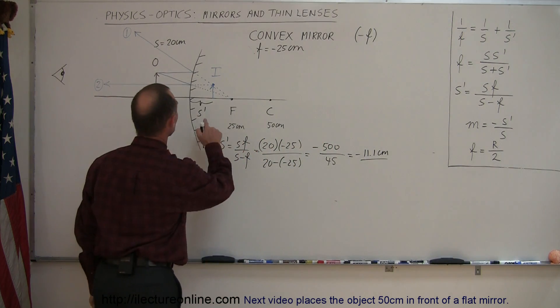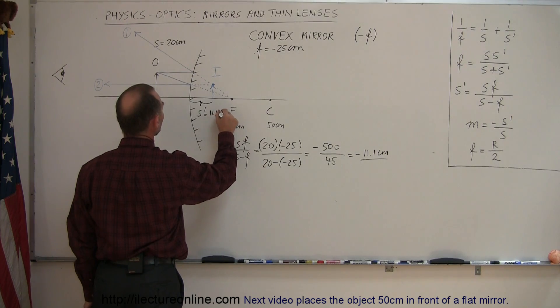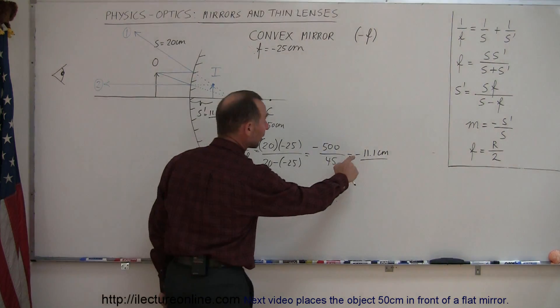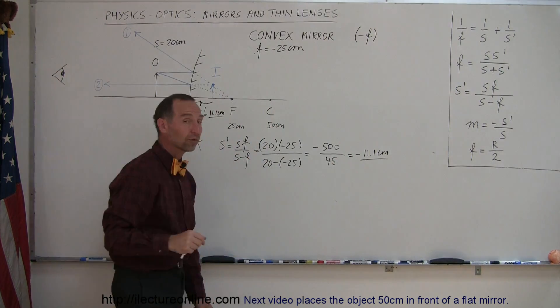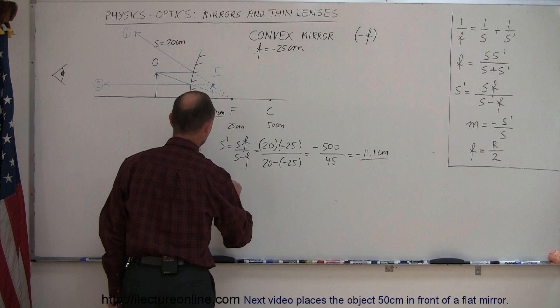All right, so we found the distance to the image. That would be 11.1 centimeters behind the mirror. That's what the negative implies. The negative implies that it's behind the mirror. Of course if the image is behind the mirror that means it's a virtual image, not a real image. So I is virtual.